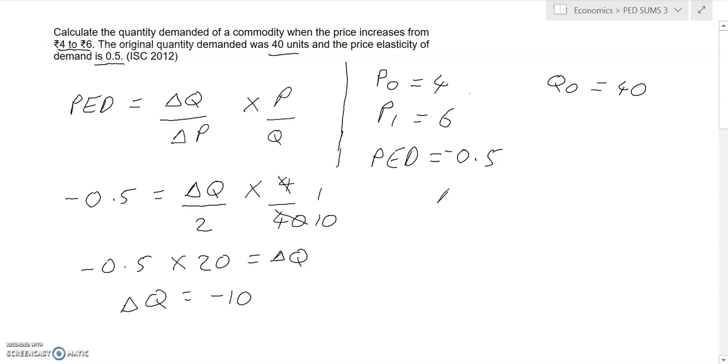Remember, when we calculated change in price, we took new minus old, P1 minus P0. Similarly, change in quantity demanded is new quantity demanded minus old quantity demanded, and we know the old quantity demanded is 40.